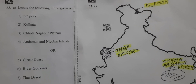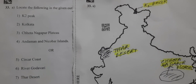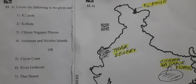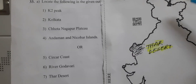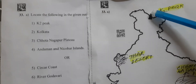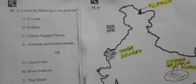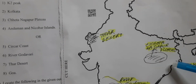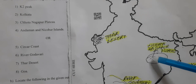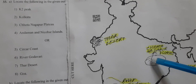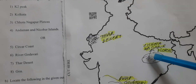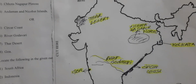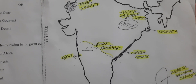Question 33A: Locate the following on the outline map of India — K2 peak, Kolkata in West Bengal, Chotanagpur Plateau in West Bengal, Andaman and Nicobar Islands, and Bay of Bengal.